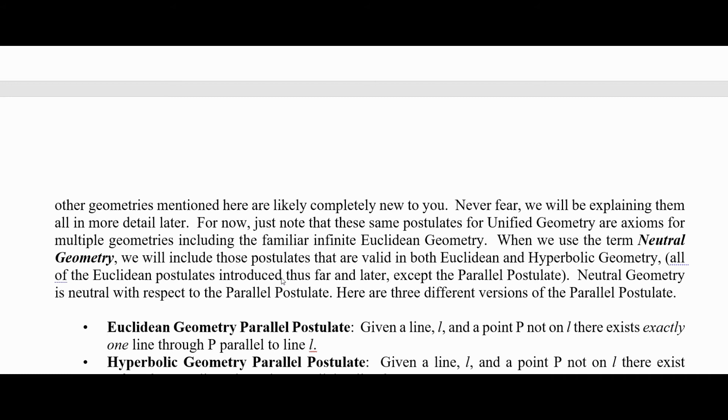When we use the term neutral geometry, we include those postulates that are valid in both Euclidean and hyperbolic geometry, all of the Euclidean postulates introduced thus far and later, except for the parallel postulate. Neutral geometry is neutral with respect to the parallel postulate. And there are three different versions of the parallel postulate.